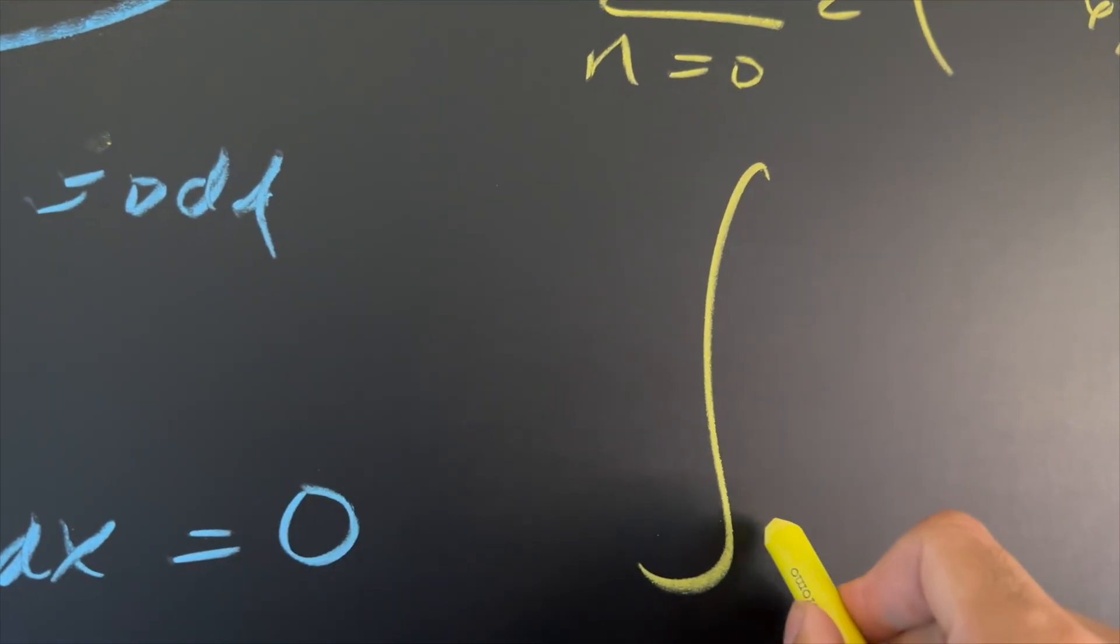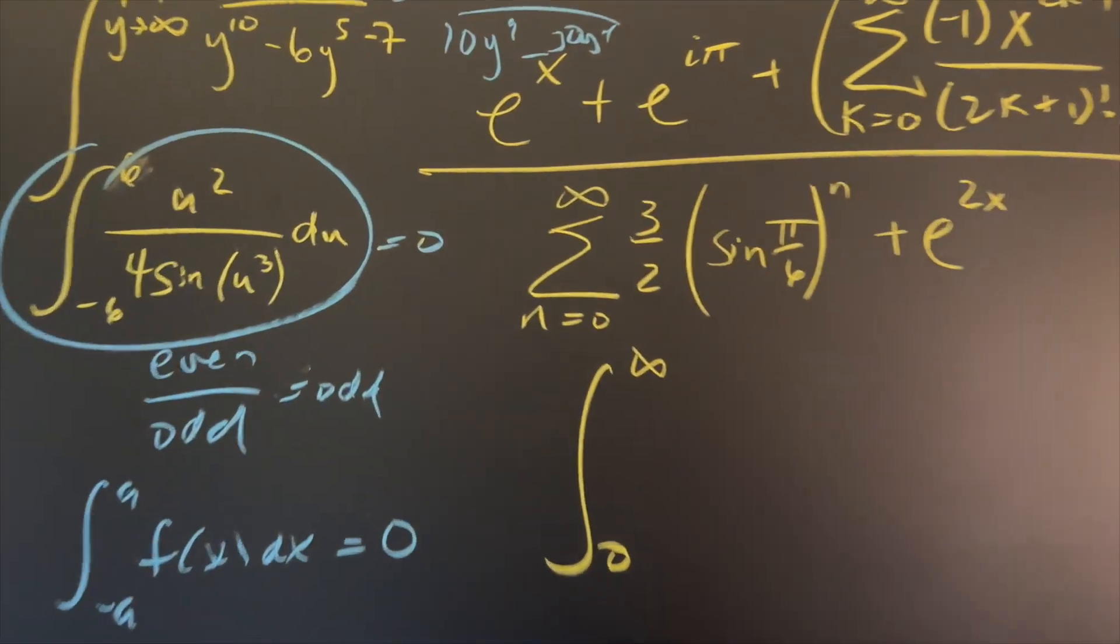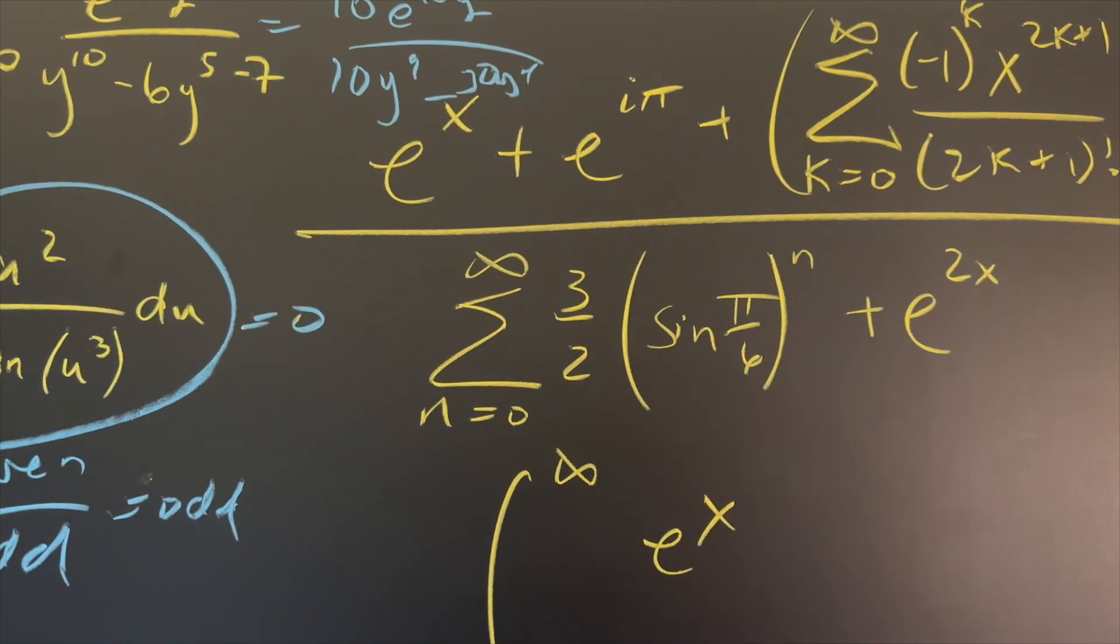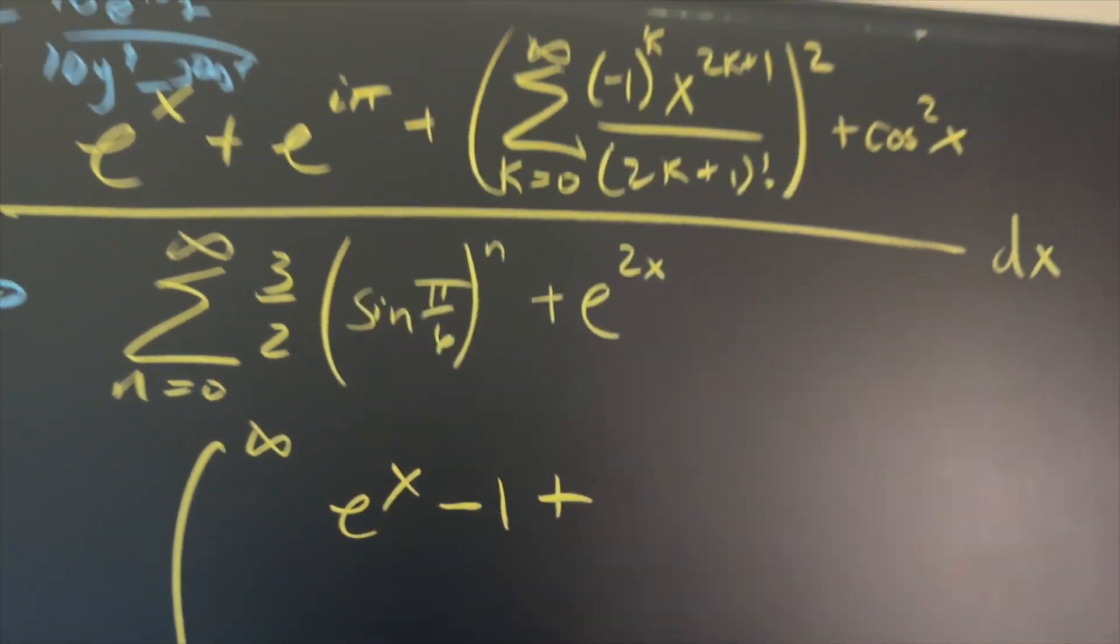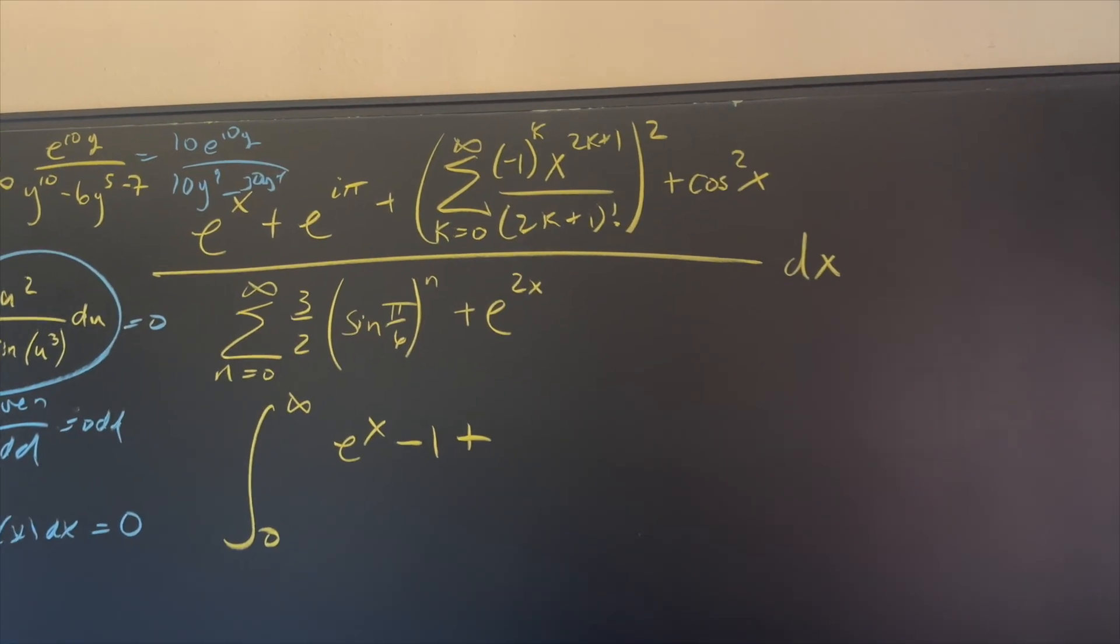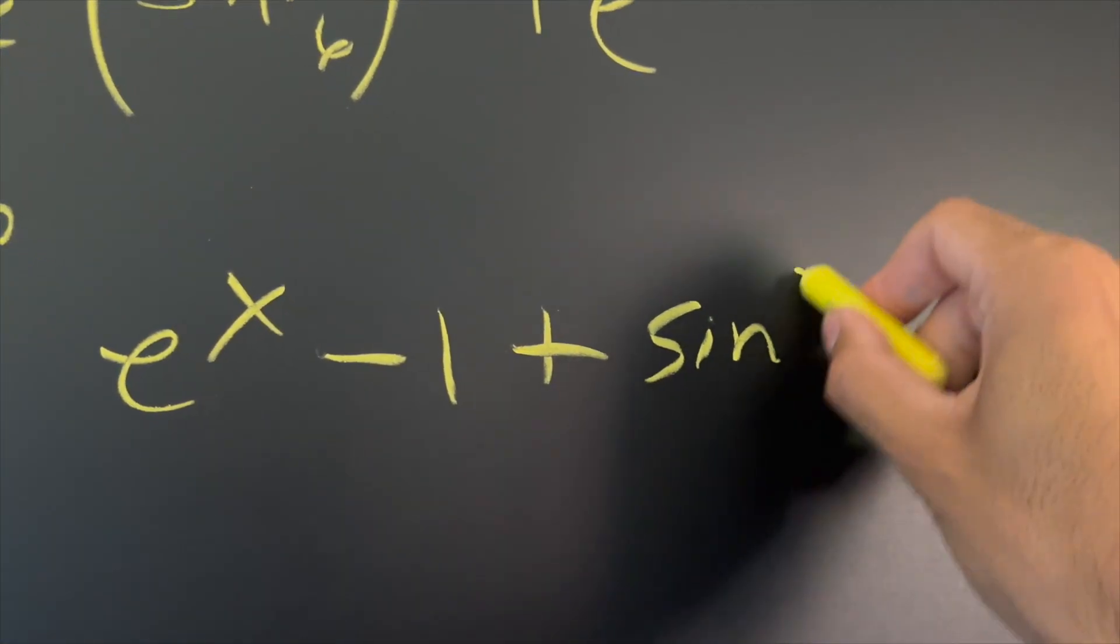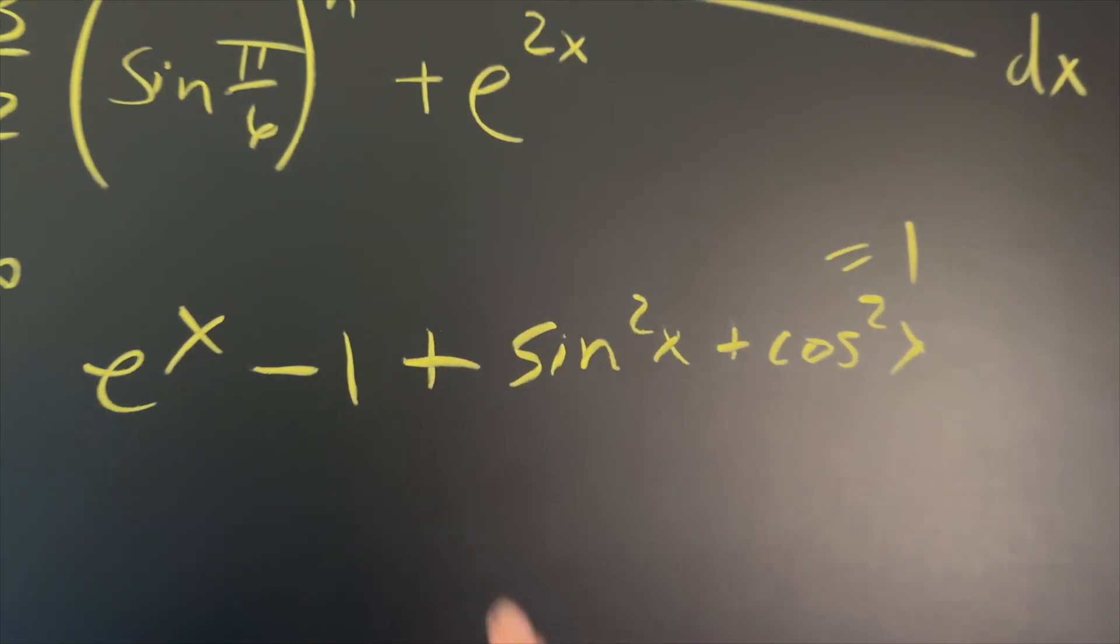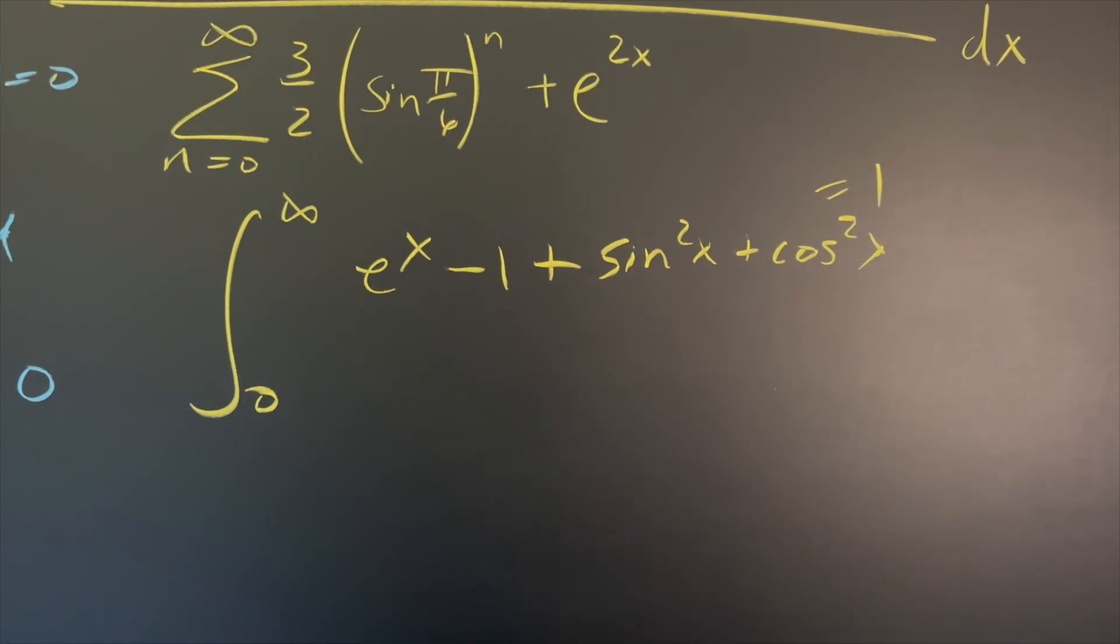So, so far we have the integral from zero to infinity. And now we just have to start dealing with all these other things. Well, we have e to the x, which e to the x is just e to the x. E to the i pi is the Euler formula, very famous, the Euler identity. That's going to be negative one plus, and then now we continue with the series. Do you recognize that? That's just the Maclaurin series for sine. So this is the Maclaurin series for sine, but then you square it, you get sine squared plus cosine squared. Wow. What do you know? That is equal to one. So right now we have e to the x minus one plus one. So it'll eventually just become e to the x on the top.